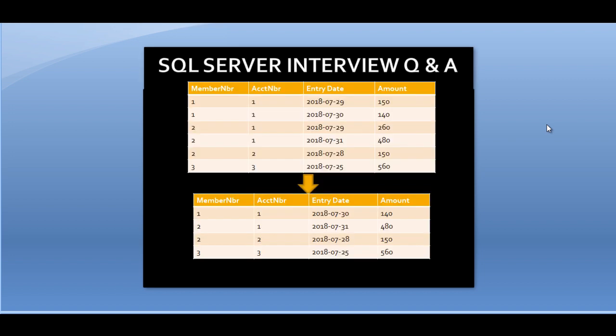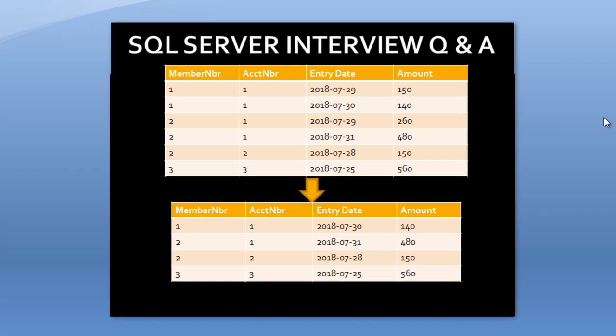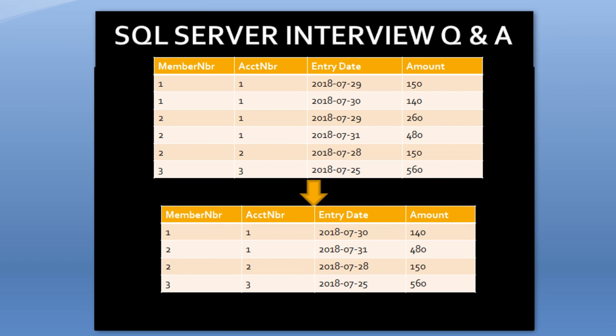On this slide, you can see we have an input table that contains four columns. The first column is member number, second is account number, third is entry date, and the last column is amount. This table contains the information of account transactions. In our output table we again have four columns: member number, account number, entry date, and amount — the same columns as the input table.